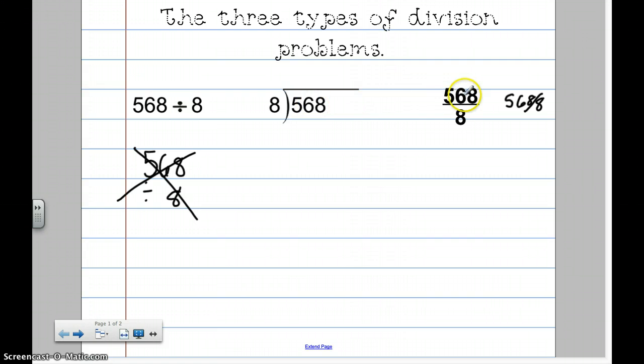So, you would set this one up like this, and you would set this one up like this. So, you would take this one and do 568 divided by 8. This one, you could think of it like an ice cream cone.